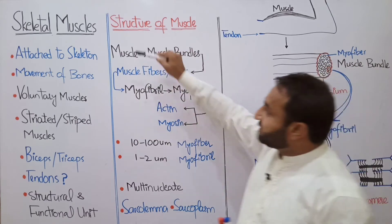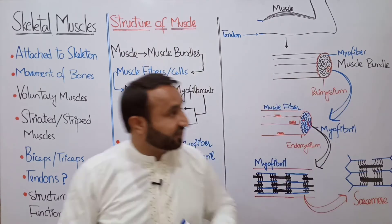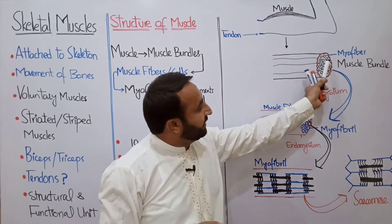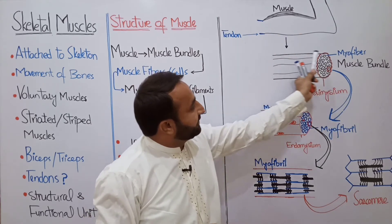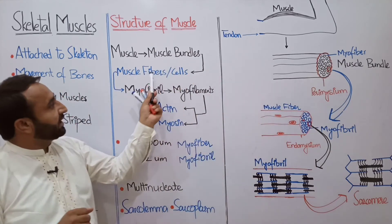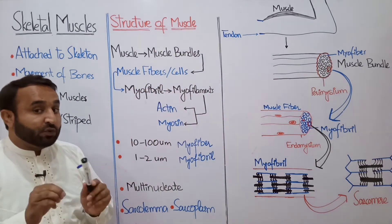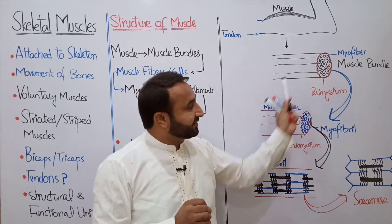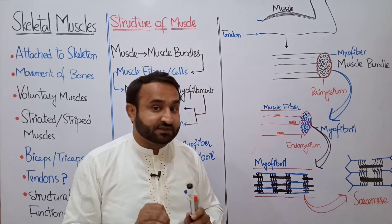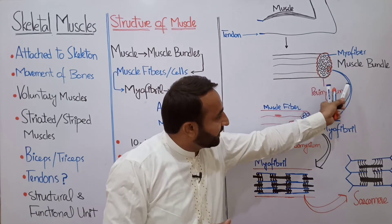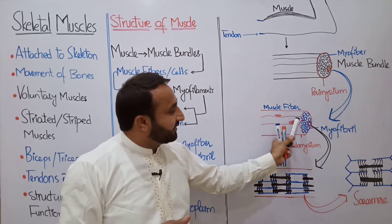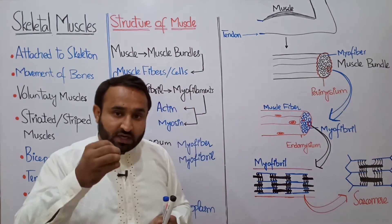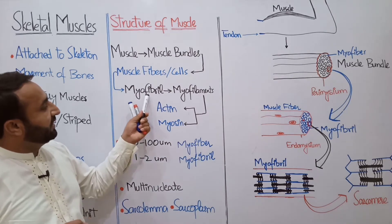Structure of a muscle: Each muscle — for example the bicep muscle — is made up of muscle bundles, also called myofibers. Inside a muscle fiber there are myofibrils. 'Fibril' means small fiber. So myofibrils are smaller fibers inside the muscle fiber, and inside myofibrils are myofilaments.